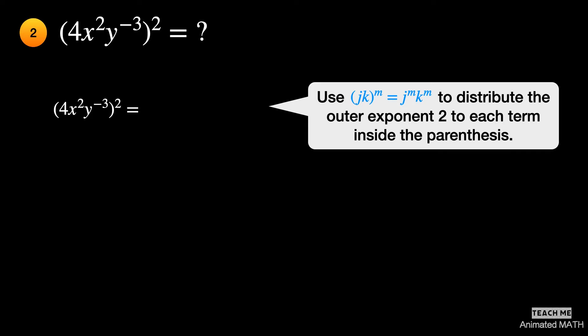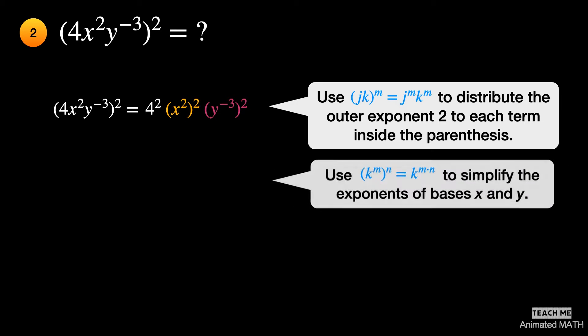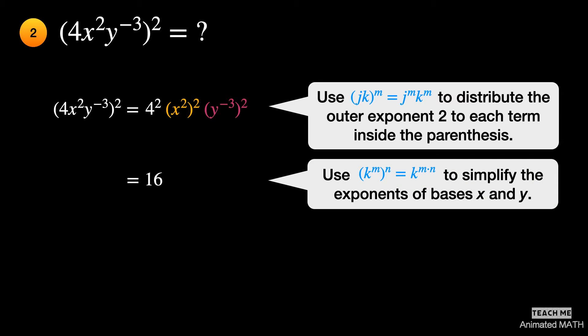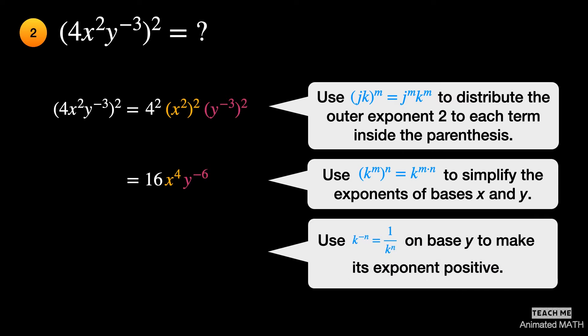Use the eighth property to distribute the exponent two to each term inside the parenthesis. Use the seventh property for the x term — multiply the exponent two with two, which results in the exponent four. Use the seventh property for the y term — multiply the exponent negative three with two, which results in the exponent negative six. Use the fourth property for the y term. The final answer is 16x to the fourth power over y to the sixth power.